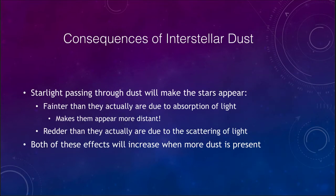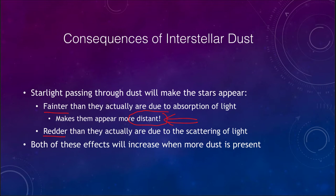So what does the dust do? It makes stars appear fainter than they otherwise would, and it makes them appear redder. When it makes them appear fainter, that throws off our distance estimates — it makes them look more distant than they really are. If we don't know about the dust and don't account for it, we will underestimate their luminosity and think they are farther away than they actually are. Before we understood dust, this had an effect on our distance measurements. The more dust present, the more prominent both of these effects become.